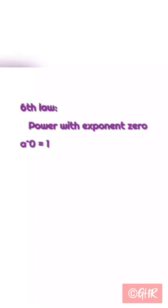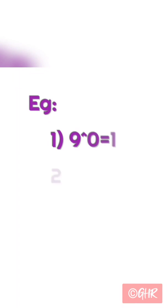Sixth law: power with exponent 0. a to the power of 0 is equal to 1. Example: 9 to the power of 0 is equal to 1. Second example: 4 to the power of 0 is equal to 1.